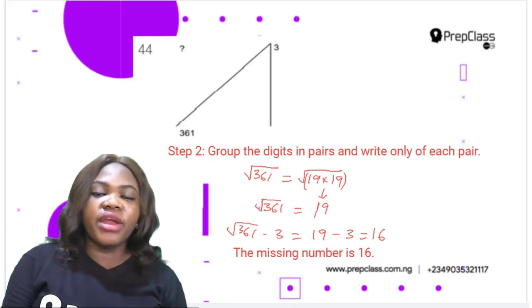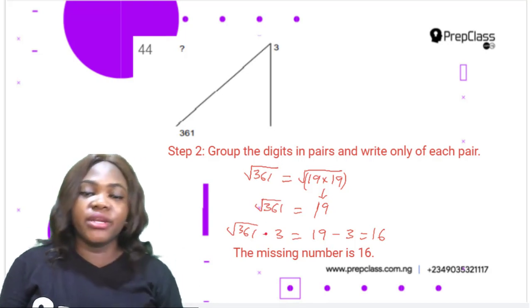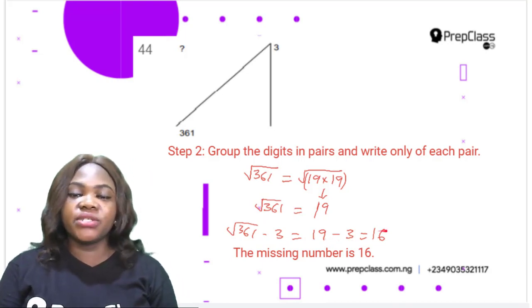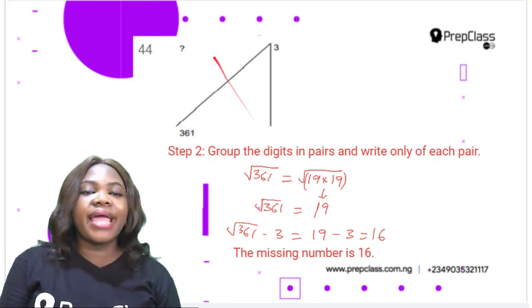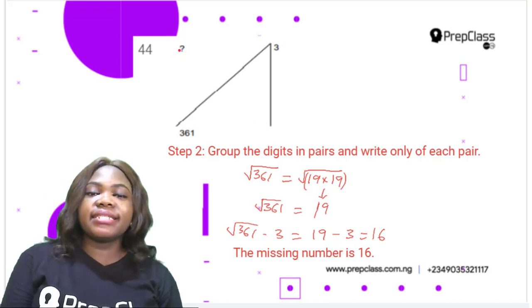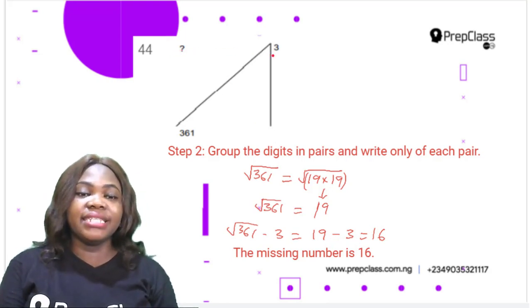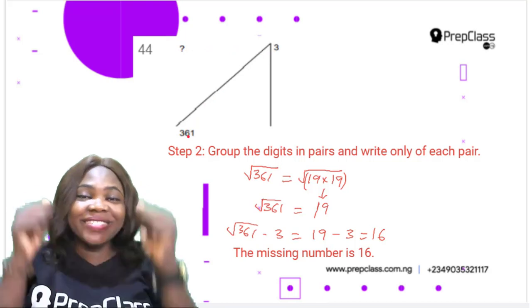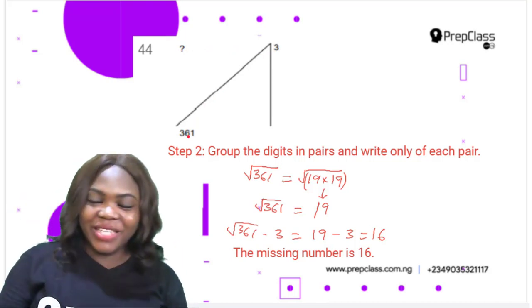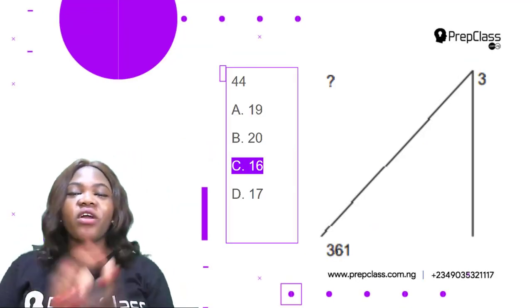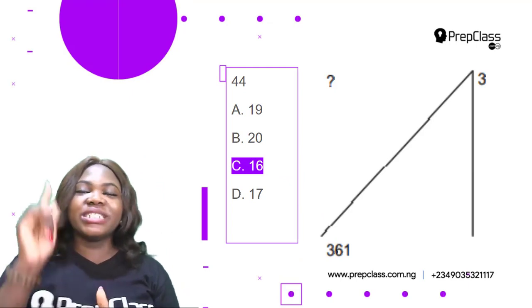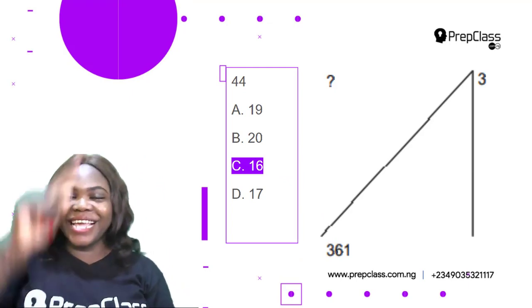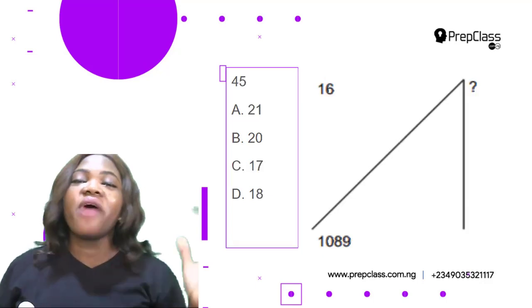Now, √361 − 3 = 19 − 3 = 16. The missing number is 16. To verify: 16 + 3 = 19, and 19² = 361. The correct option is C: 16.